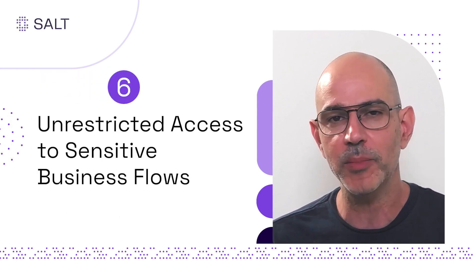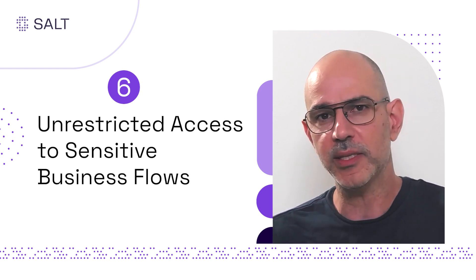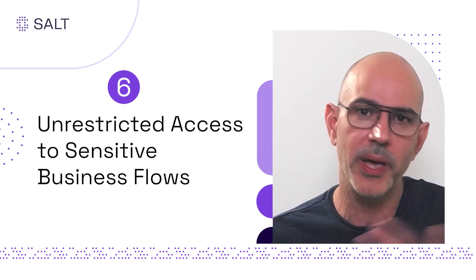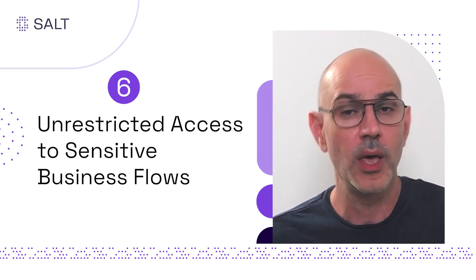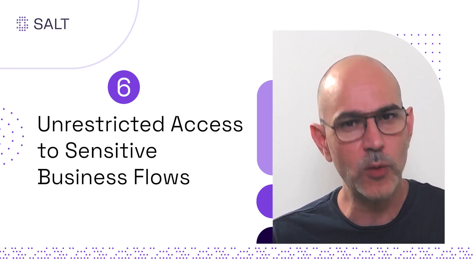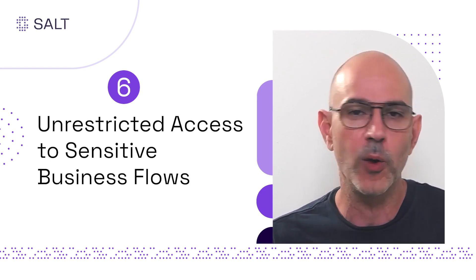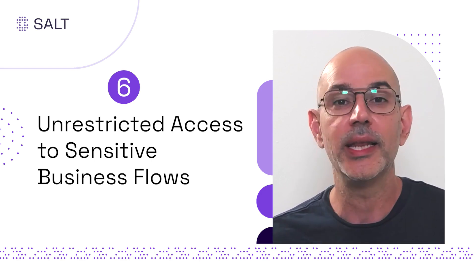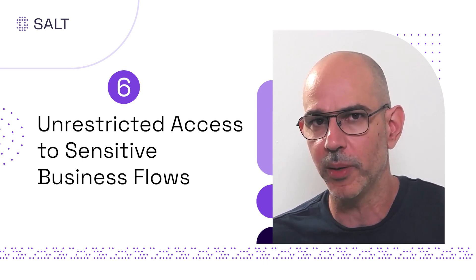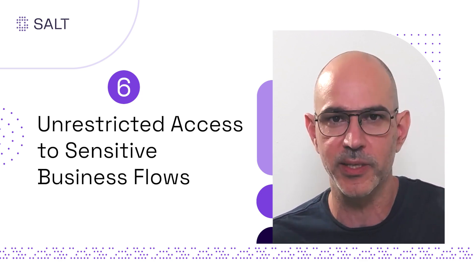API 6 covers cases where there is actually no technical vulnerability. Consider this use case: find an airline that sells tickets with no cancellation fees, purchase 80% of the airplane seats, then two or three days before the flight cancel all the tickets. This forces the airline to lower prices to fill the plane, and you then buy a ticket at a much lower price. The problem becomes clear when you zoom out and look at the entire chain of requests in the context of the business flow.